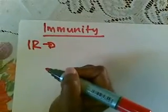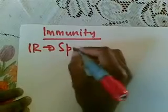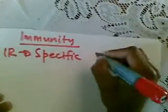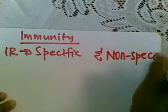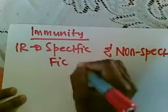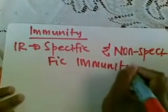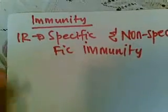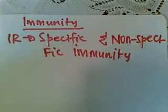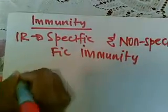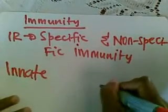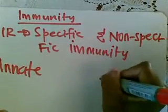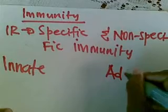Immune response is divided into two: we've got specific immune response and non-specific immune response. Before we continue, let's find the differences between the two. Remember that innate is also called non-specific immune response, and adaptive is specific immune response.